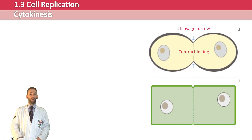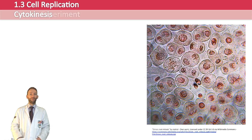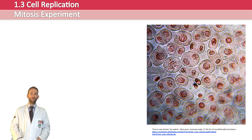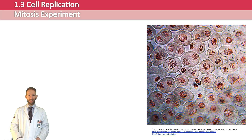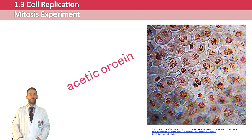In experimental work, you will prepare something called a root tip squash. You get a few millimetres from a growing root tip — maybe from an onion or garlic — where lots of cell division is happening in a region of growth called a meristem, where you get lots of mitosis. Using a dye called acetic orcein, you can stain the chromosomes and identify cells undergoing different stages of mitosis.